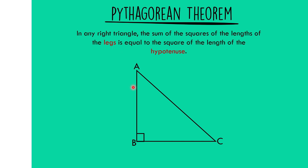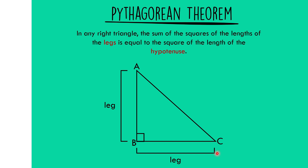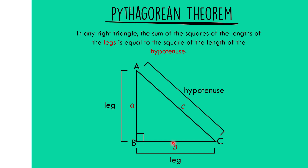So here, side AB and side BC form the right angle. Therefore, our legs are side AB and side BC, in which the longest side is what we call the hypotenuse. In the Pythagorean theorem, we note these sides as small letters A, B, and C, where A and B are the legs and C is the hypotenuse.